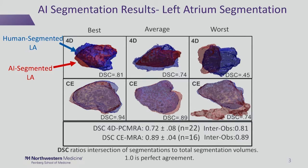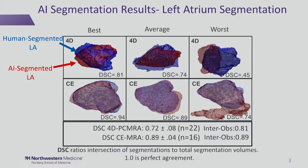We can see that the average dice score for the AI to human was 0.72, with the inter-observer between two humans being 0.81. For contrast-enhanced, the average dice score between the AI and the manual human was 0.89, where the inter-observer between two manual humans was also 0.89.